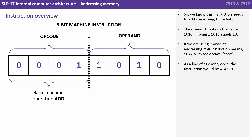So we know this instruction needs to add something, but what? The operand contains the value 1 0 1 0 — in binary 1 0 1 0 equals 10. If we're using immediate addressing the instruction literally means add 10 to the accumulator. As a line of assembly code the instruction would be ADD 10.